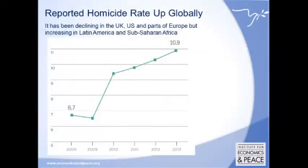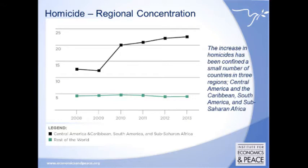One of the more striking trends this year is the increase in global homicides. Looking at UNODC data, there's been a sustained and quite significant increase since 2000. Regionally, it's quite unequally distributed. Central America and the Caribbean, South America, and sub-Saharan Africa have all seen a gradual increase, but the rest of the world has remained more or less the same. We've seen declining homicide rates in the US and UK and parts of Europe, but it's not the case in many other parts of the world.